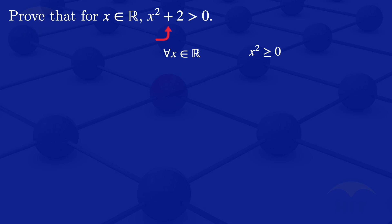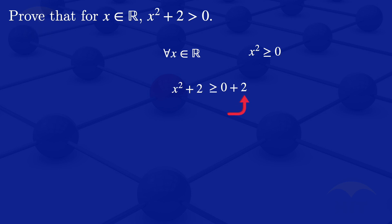In our case we have x squared plus 2. Since x squared is greater than or equal to 0, this expression x squared plus 2 is greater than or equal to 0 plus 2. Now, 2 is just an integer and 2 is greater than 0, so if 2 is greater than 0 and we are adding it to 0, that means this expression is greater than 0.